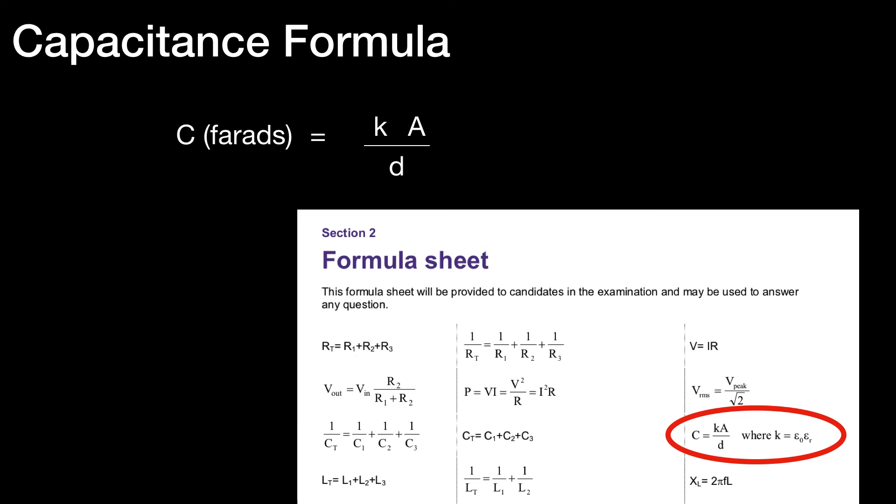So for a capacitor, C equals Ka over D, and K equals epsilon 0 times epsilon R.